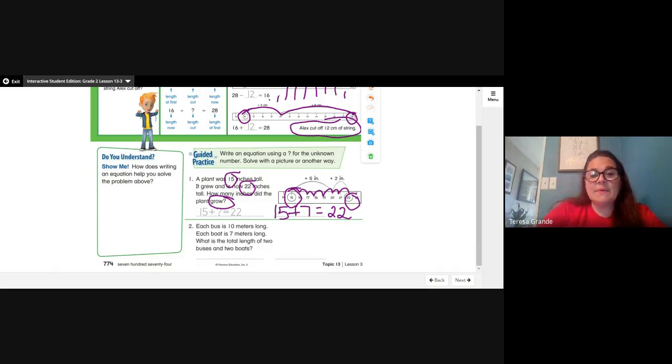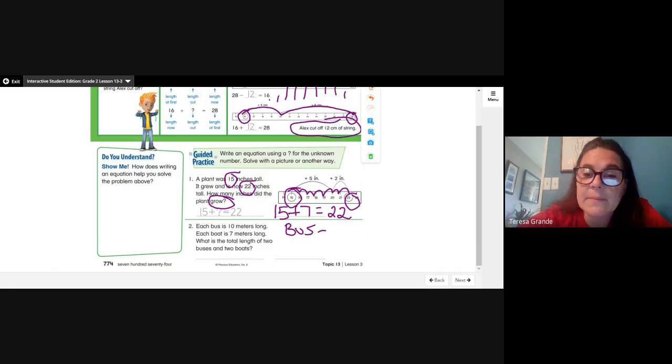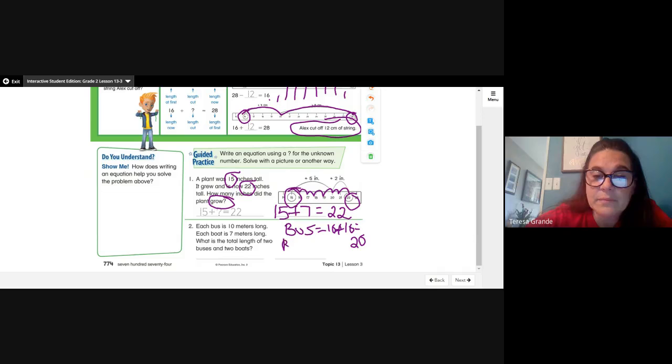Now let's try number 2. Each bus is 10 meters long. Each boat is 7 meters long. What is the total length of two buses and two boats? We can add 10 plus 10 to find the buses, which is adding doubles. Do we know how much 10 plus 10 is? Right, it's 20. Now for the boats, we're going to add doubles again: 7 plus 7. We know that 7 plus 7 equals, right, 14.